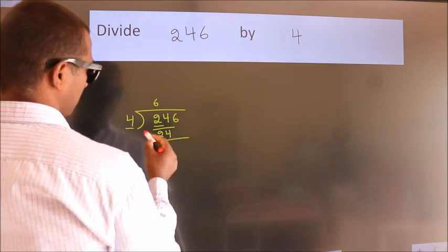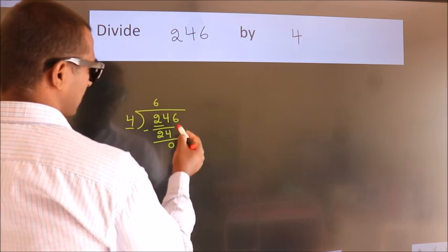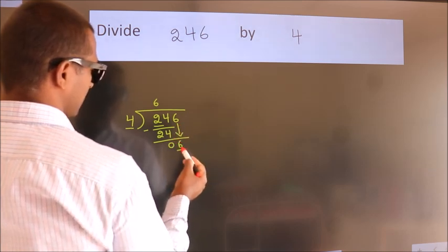Now we should subtract, we get 0. After this, bring down the beside number, so 6 down, so 6.